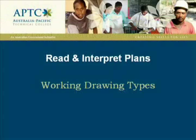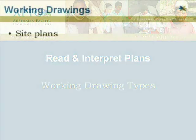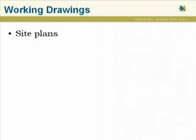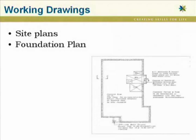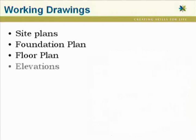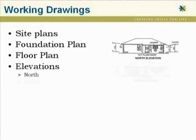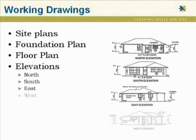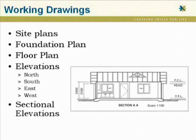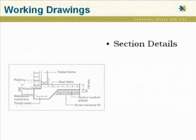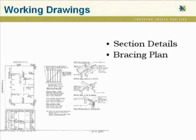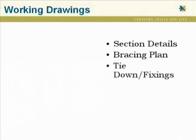The most common types of working drawings that you'll find on a set of plans are as follows: site plans, foundation plans, floor plans, elevations — north, south, east and west, or 1, 2, 3 and 4 — sectional elevations, sectional details, bracing plans, and tie-down fixings.